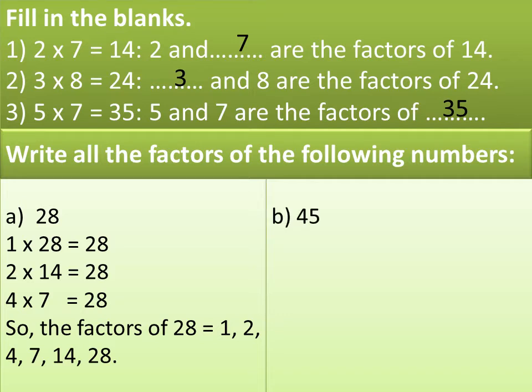Let's try to find the factors of 45. We have to think of all possible combinations of 45. Always start with 1 and the number itself. So 45 can be written as 1 multiplied by 45 equals 45. Is 45 divisible by 2? No. Is 45 divisible by 3? Yes — if you have any doubt, divide and check: quotient equals 15 and remainder equals 0. So the product can be written as 3 multiplied by 15 equals 45.